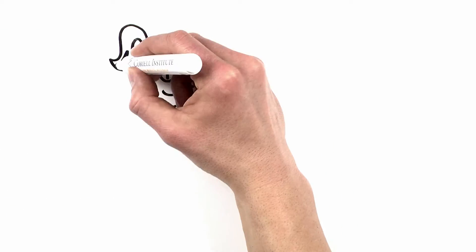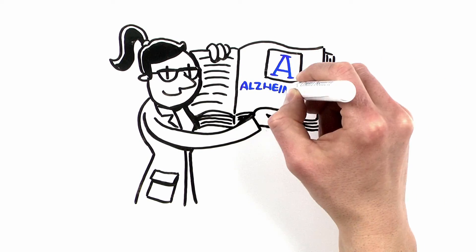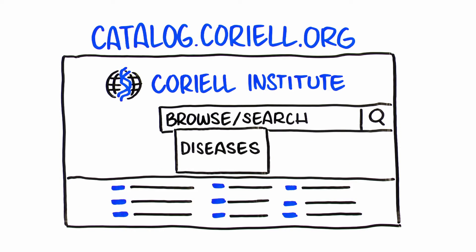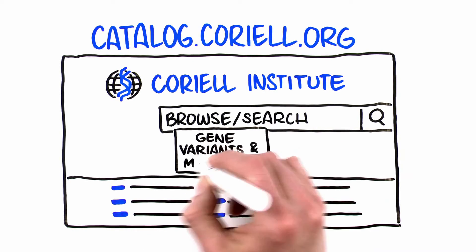Additionally, the versatility of the Coriell catalog enables you to find your materials in a number of convenient ways. You can search by disease name, or if your work requires that you focus on a particular gene of interest, navigate by gene variants and mutations.